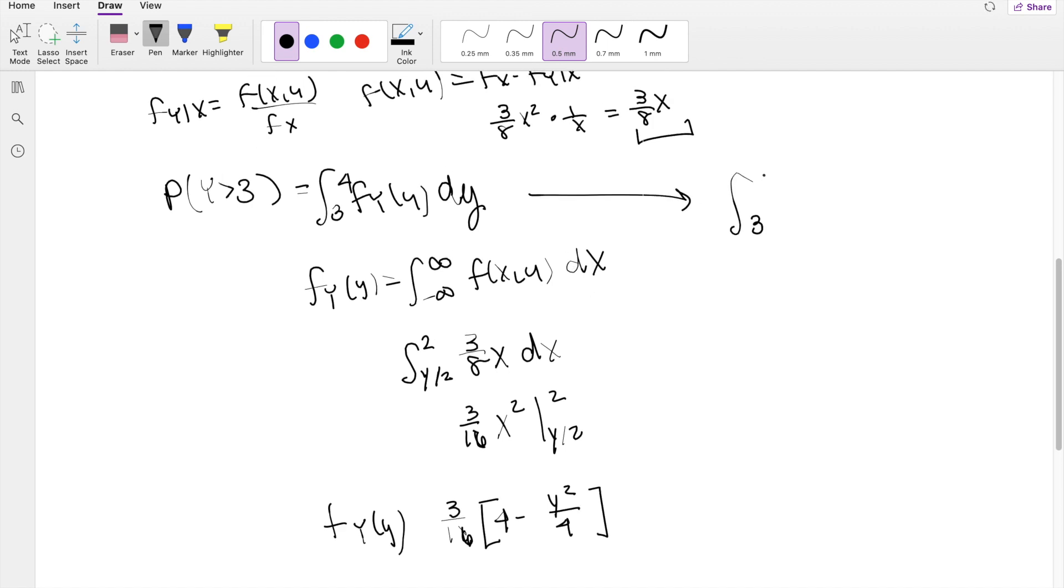So that's again going from 3 to 4 of the marginal distribution of y. I'm going to throw that constant outside, 3 over 16, times 4 minus y squared over 4 dy. So then taking the anti-derivative, this equals 4y minus y cubed over 12, integrating from 3 to 4 of 3 over 16.